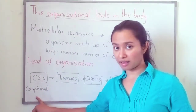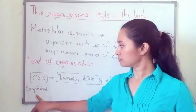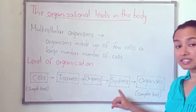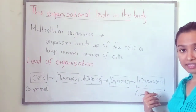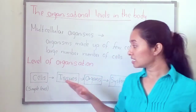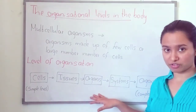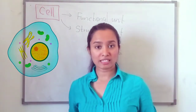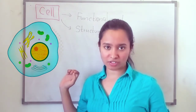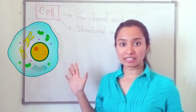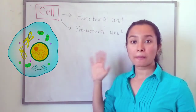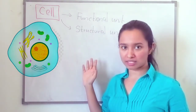The five levels are: cells, then tissues, then organs, then systems, and then organisms. In this chapter, we are going to discuss each and every level of organization. The first organizational level is the cell — that is the simple level of organization. The cell is the basic structural and functional unit of the organism.